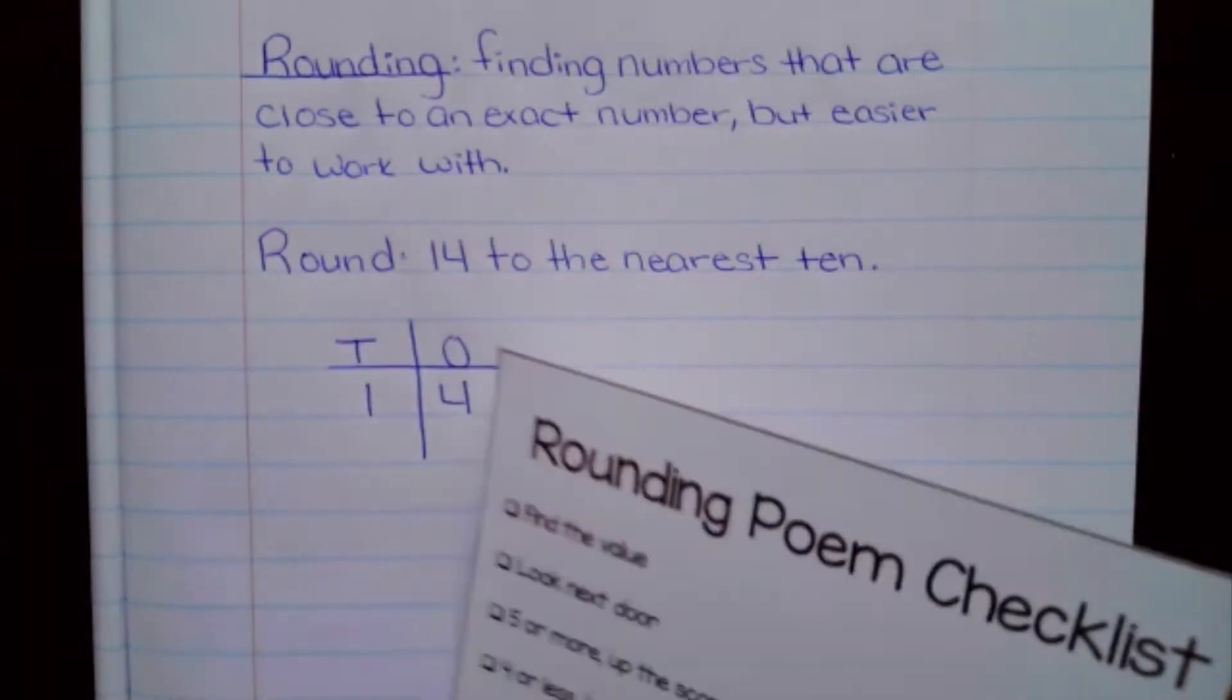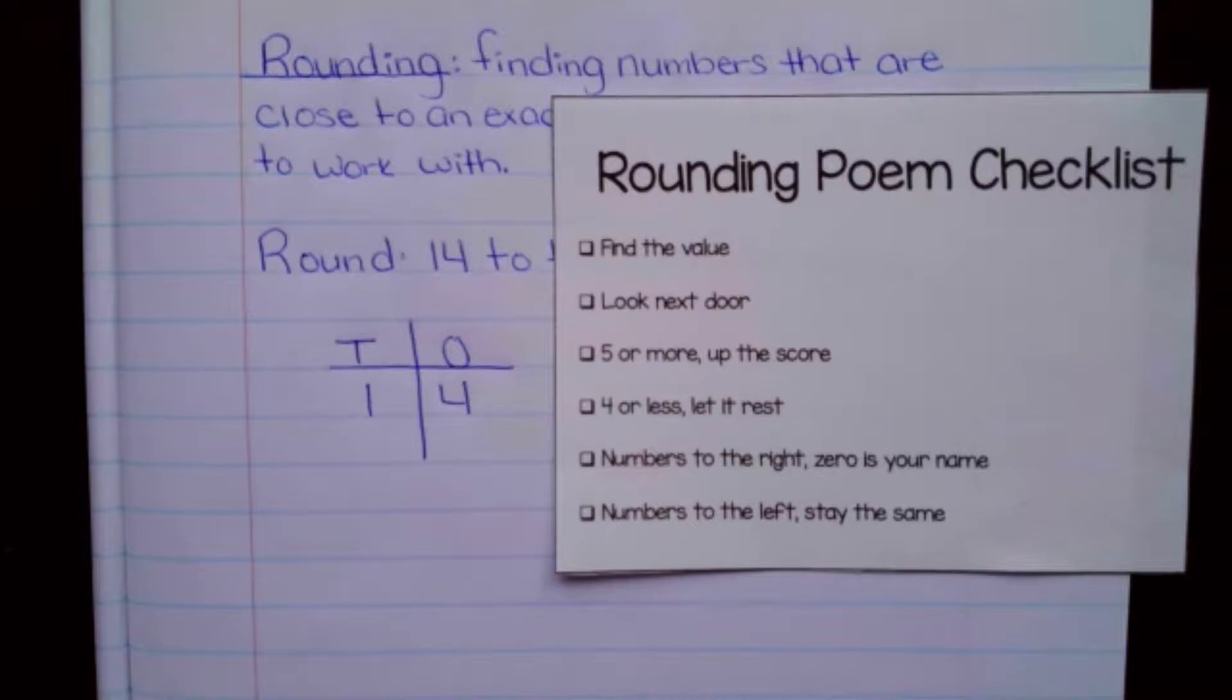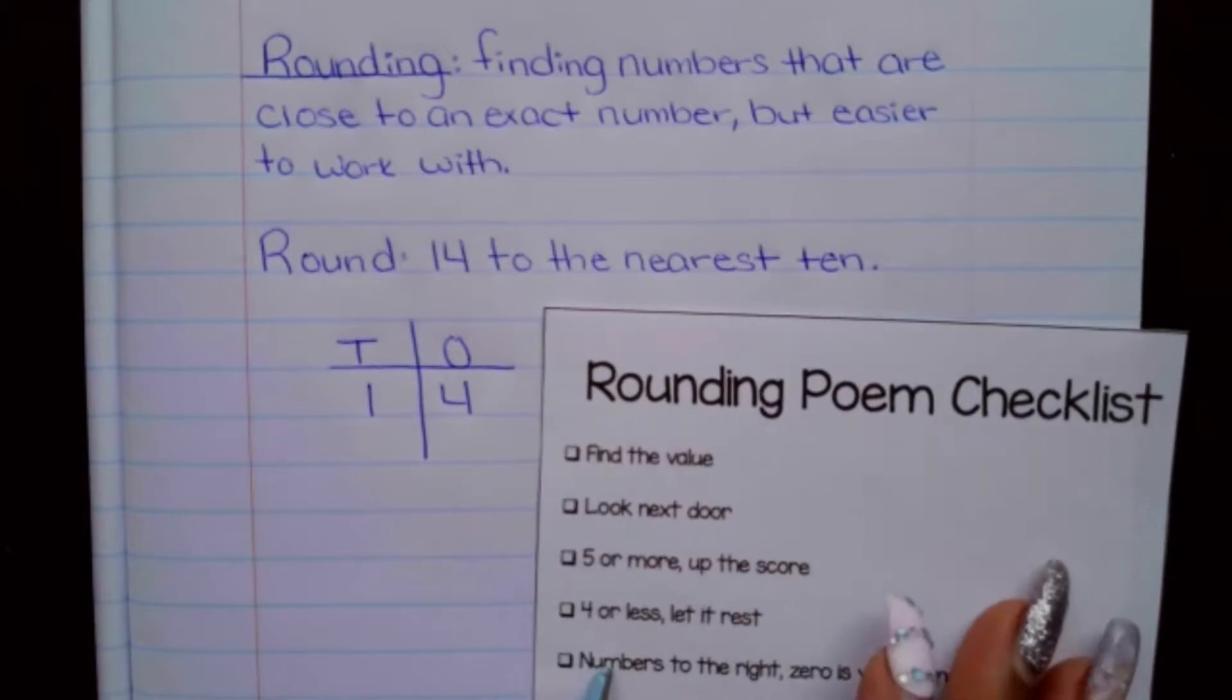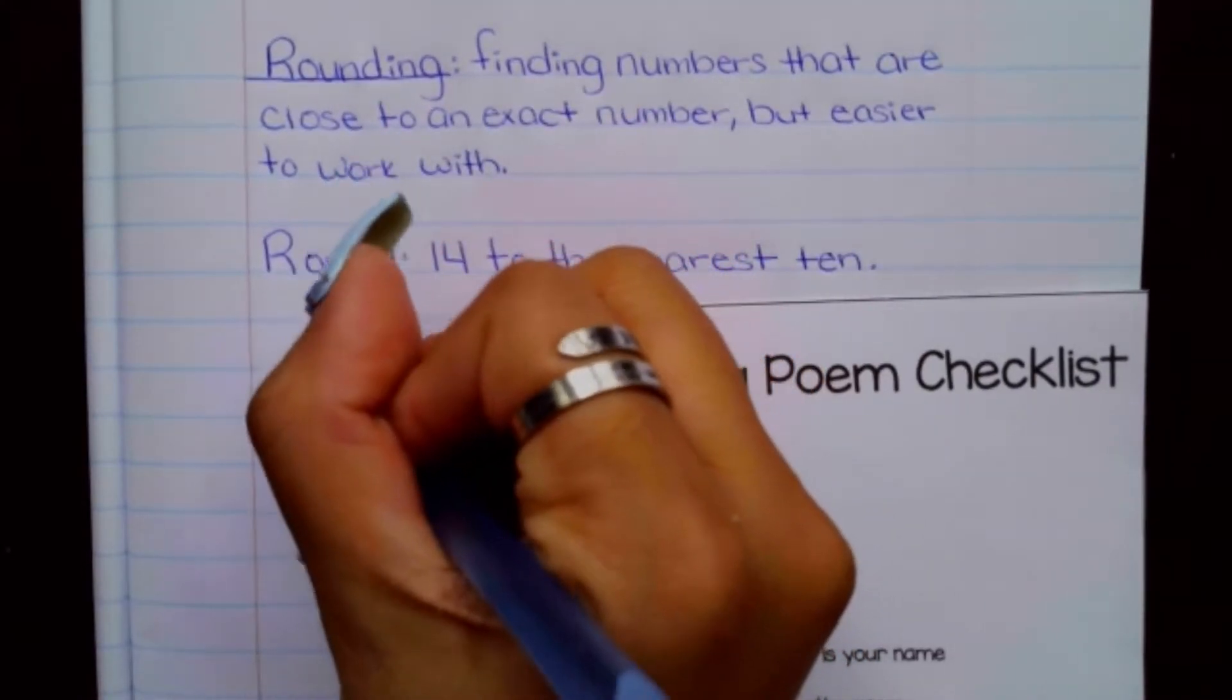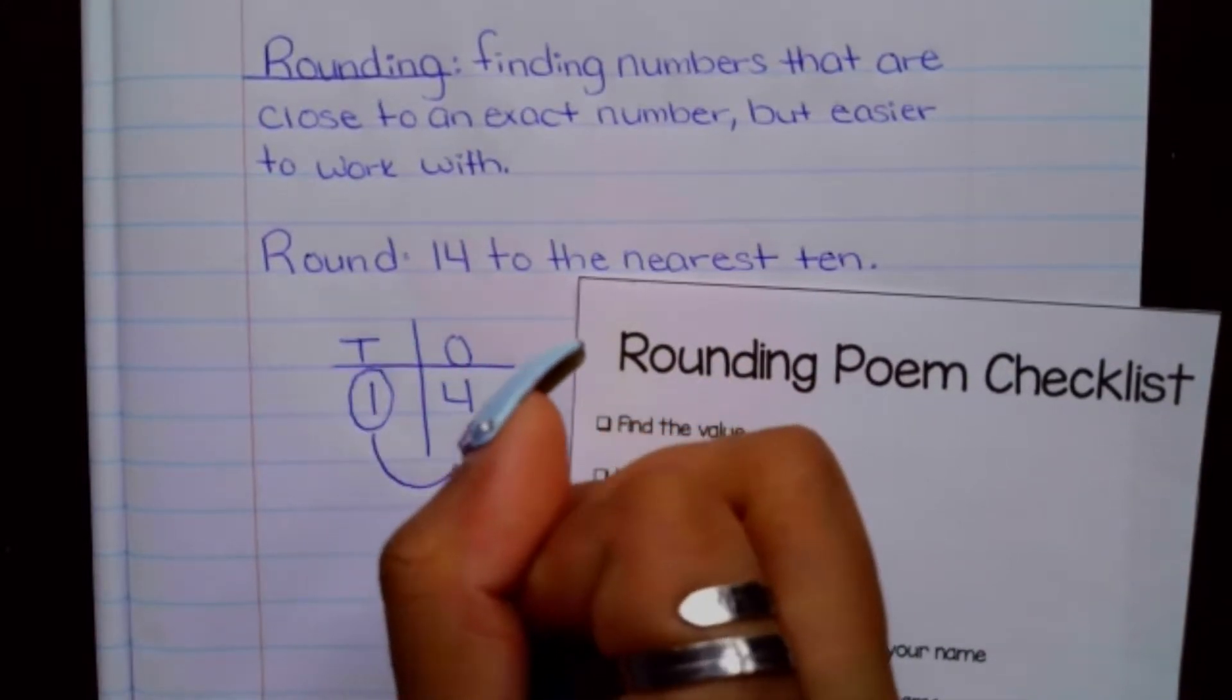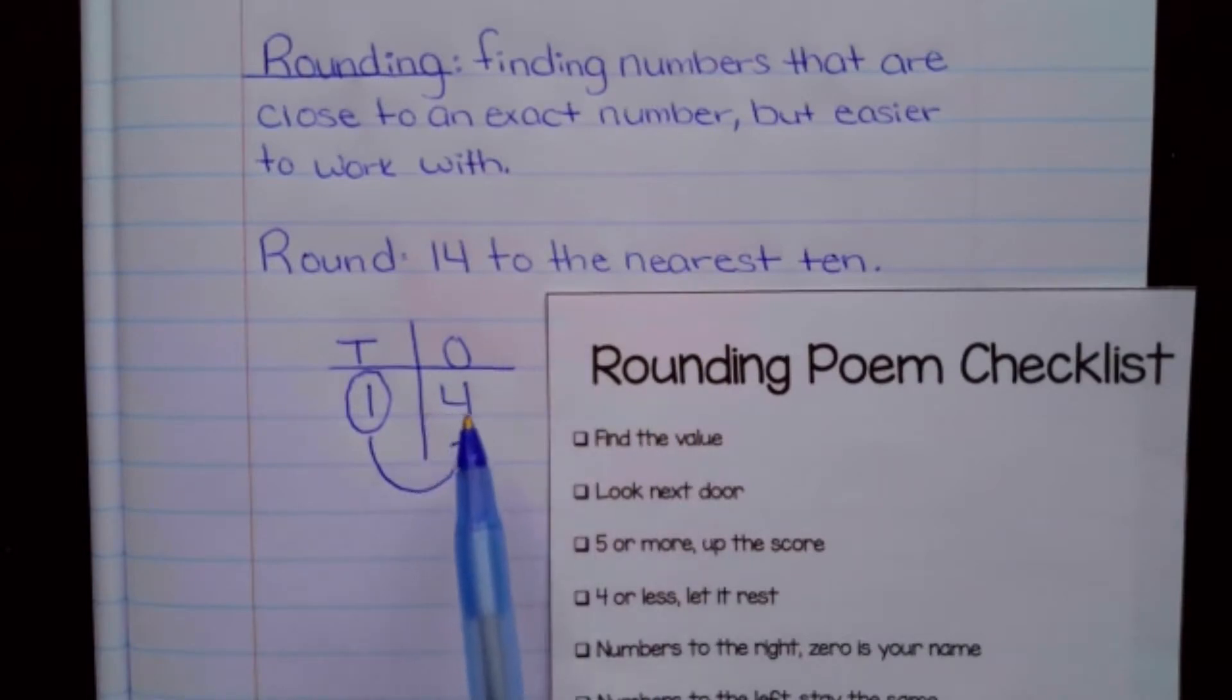So according to our checklist here, it says to first find the value. So according to our question, we're rounding to the nearest 10. So that means we're paying attention to our 1, and then we're looking next door. So what I like to do is circle the value, draw an arrow to look next door. So this digit right here is going to help us to understand if we're going to be rounding up or if it's just going to stay the same.